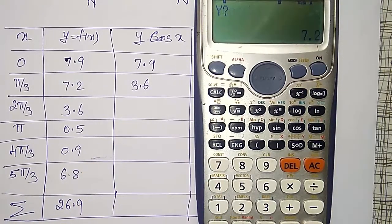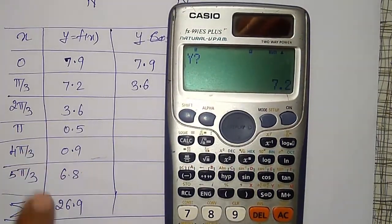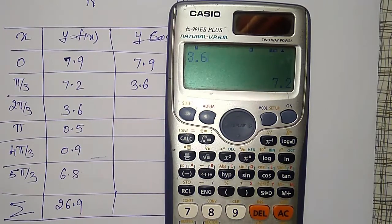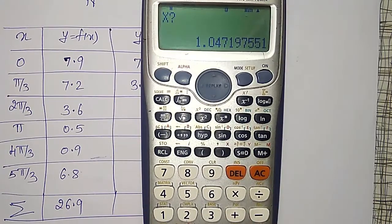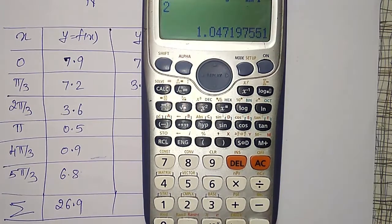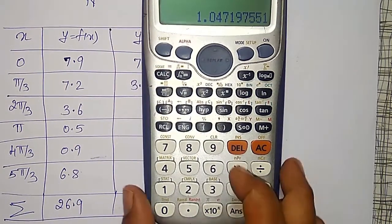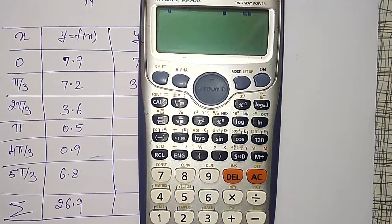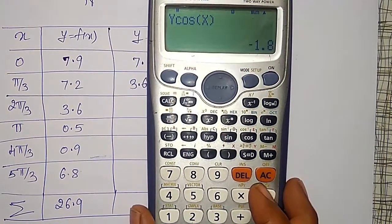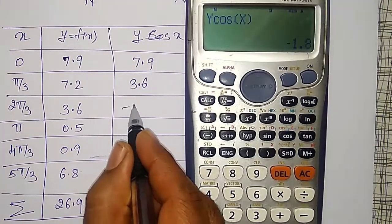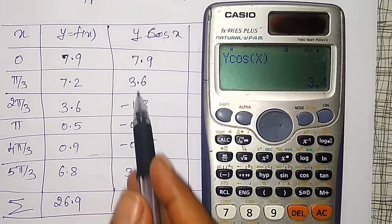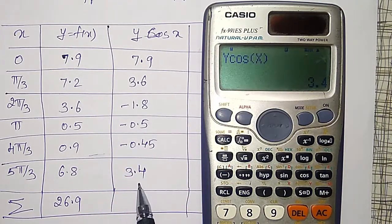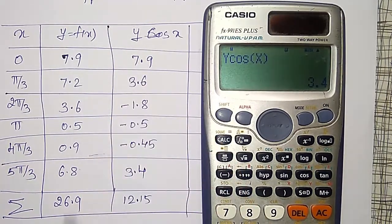Again press equal to, it will ask for y, my y value is 3.6 now, and equal to, x value is 2π by 3. To operate that 2π by 3, shift this button, divide by 3, you will get minus 1.8, and I will write remaining terms. Like this, all the y cos x values I calculated, and sum of all these things comes out to be 12.15.